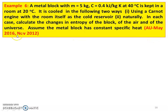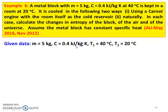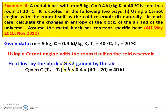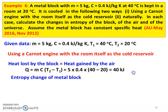This problem is from the May 2016 and November 2012 question papers. Given data: mass of the metal block is 5 kg, specific heat is 0.4 kJ per kg Kelvin, initial temperature is 40 degree Celsius, final temperature (room air temperature) is 20 degree Celsius. Using a Carnot engine with the room as cold reservoir: heat loss by the block equals heat gain by the air. Q = M × C × (T2 − T1) = 5 × 0.4 × (40 − 20) = 40 kJ.